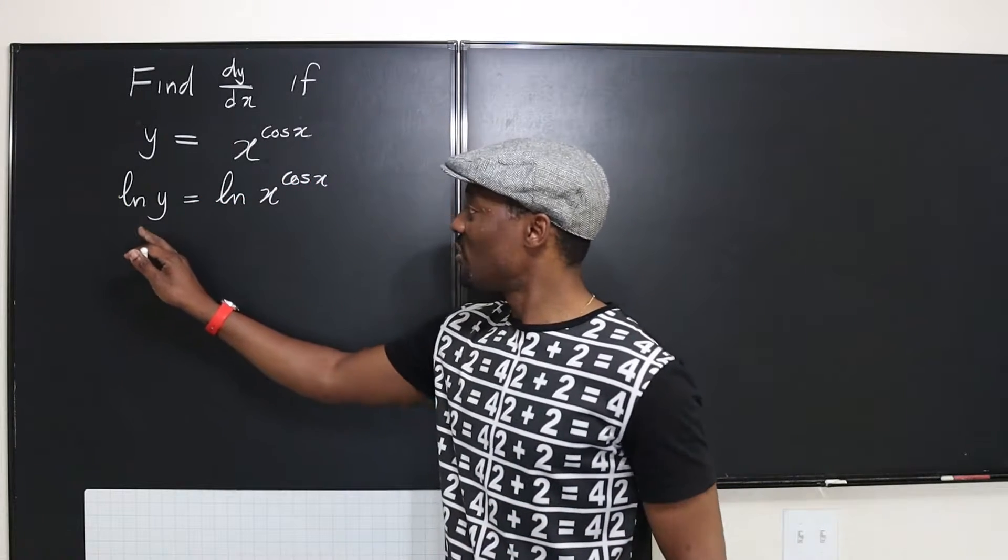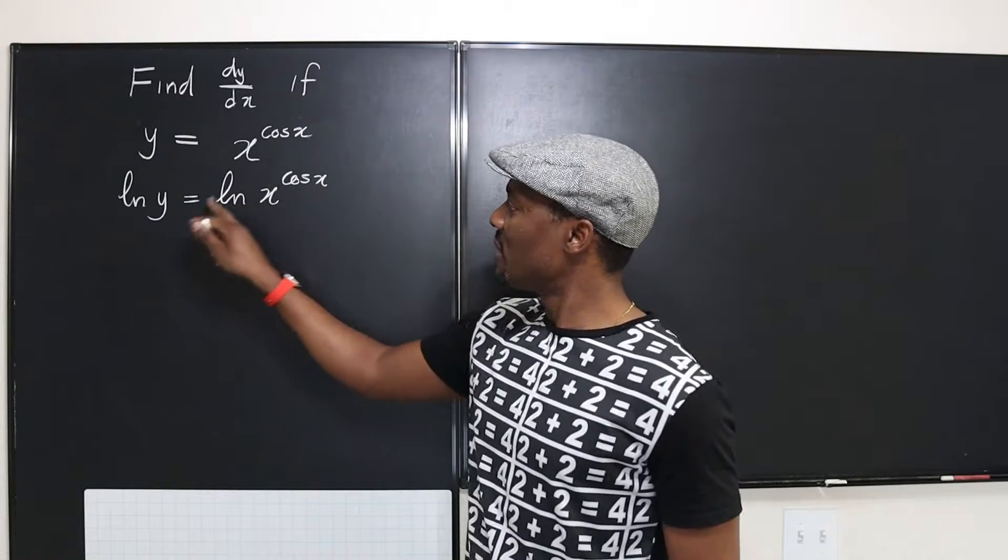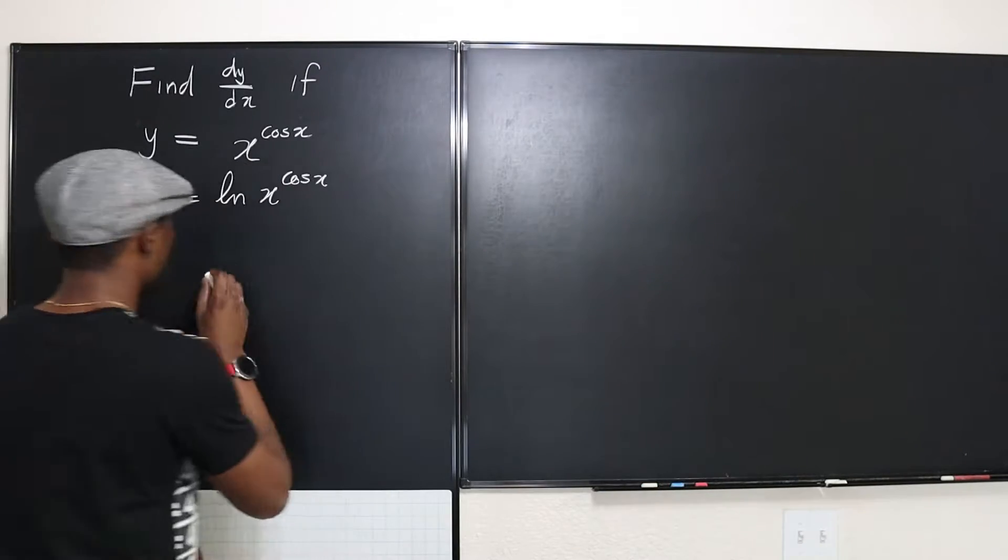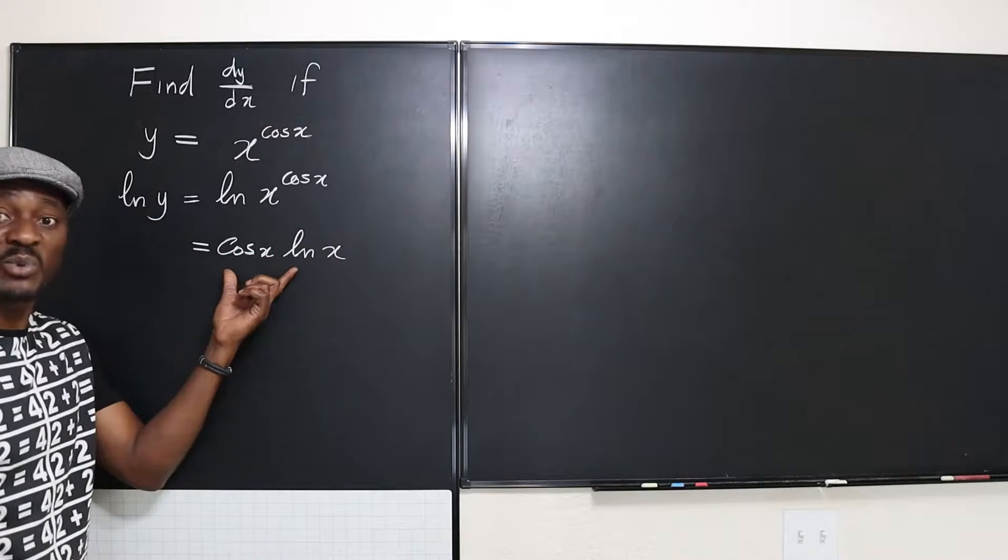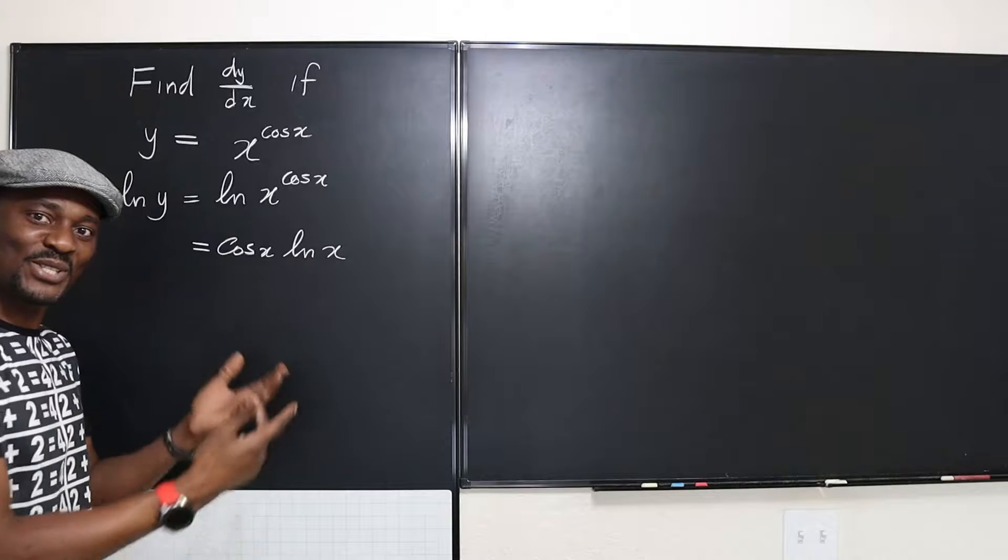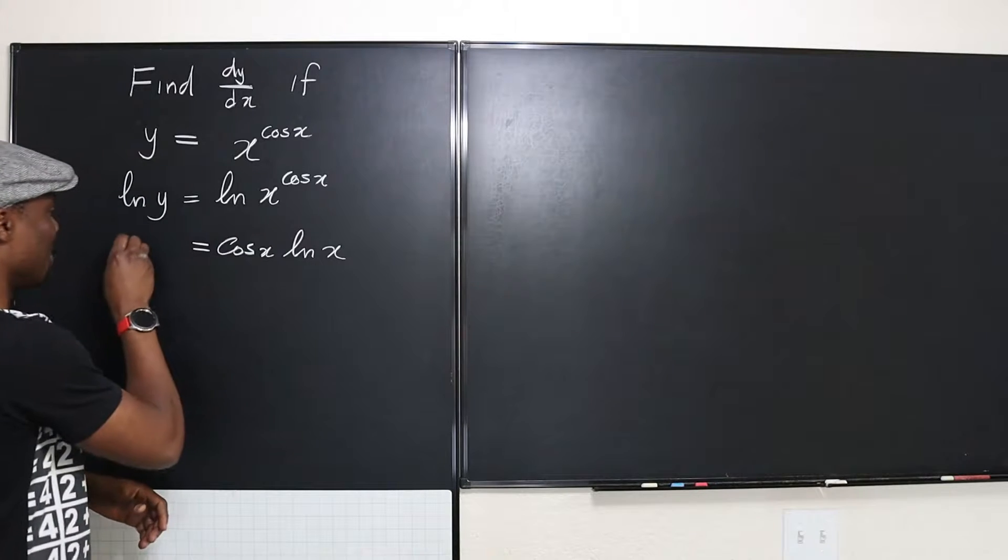So now that we've taken natural logarithm of both sides, we can drop this down because we know that we can rewrite this expression as cosine x natural log of x. So now you have a product of two functions, and that's easy. We just need to apply product rule in differentiating them.